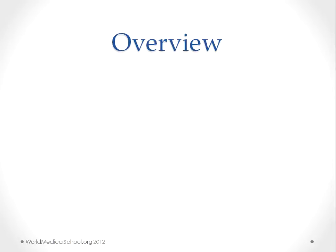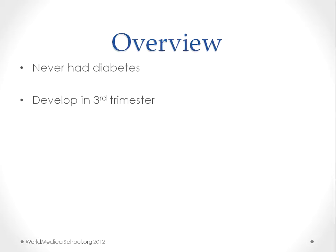Gestational diabetes is defined as new onset diabetes in a pregnant woman who never had diabetes. It usually develops in the third trimester of pregnancy, and 1 to 3% of pregnant women develop gestational diabetes mellitus.